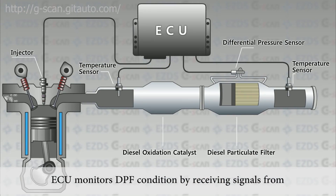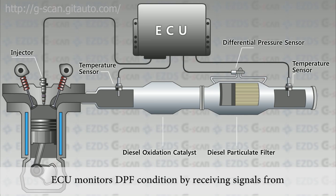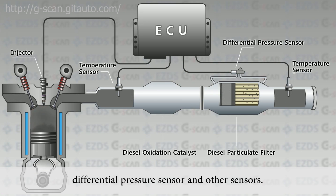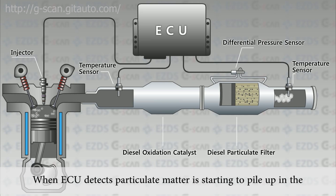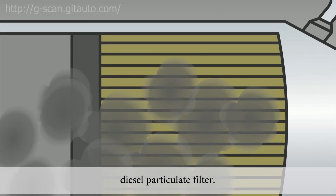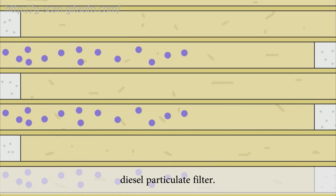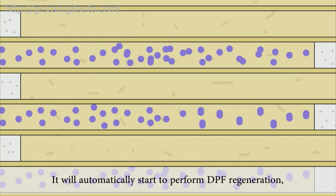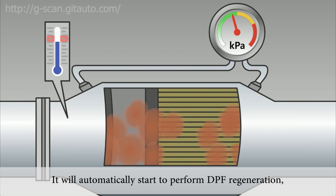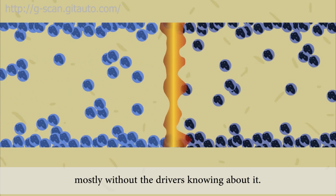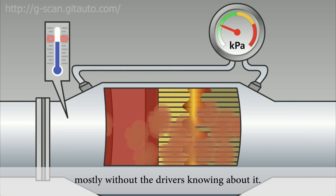The ECU monitors DPF condition by receiving signals from the differential pressure sensor and other sensors. When the ECU detects that particulate matter is starting to pile up in the diesel particulate filter, it will automatically start to perform DPF regeneration, mostly without the driver knowing about it.